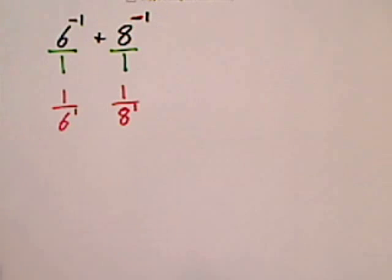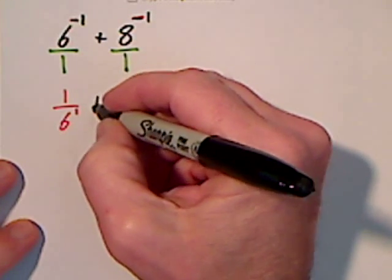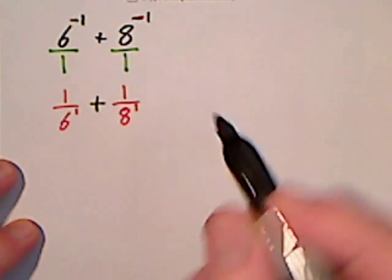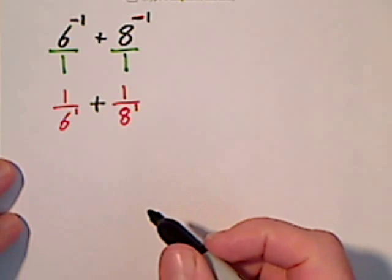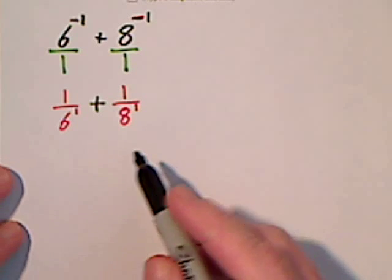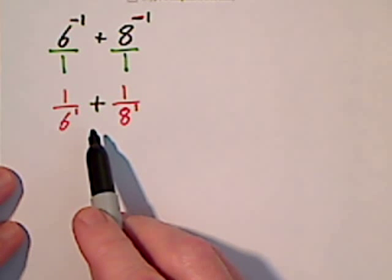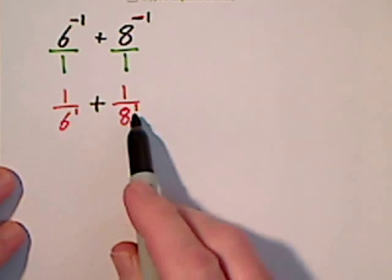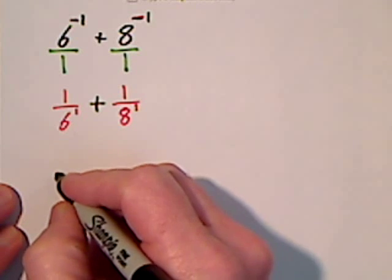I'll just bring down the plus sign. In order to add or subtract fractions you have to have common denominators, so 24 is the least common denominator.